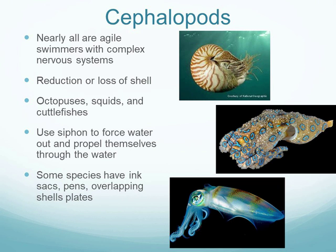Cephalopods — octopus, squid, and cuttlefish — are the most intelligent mollusks with complex nervous systems and agile swimming. They have either a reduced shell or have lost the shell completely. The blue-ringed octopus has no shell at all and is highly toxic — fatal even in Hawaii. Squid have a reduced internal shell called a pen, named because it was historically used for writing.